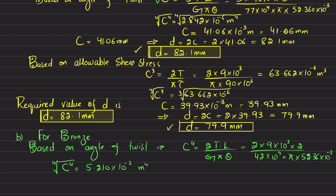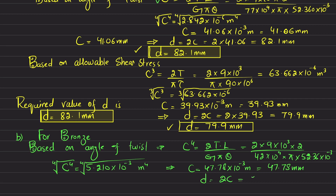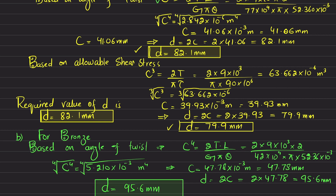Taking the fourth root gives C = 47.78 × 10⁻³ m = 47.78 mm. Therefore D = 2 × 47.78 = 95.6 mm. So based on the angle of twist constraint, the required diameter for the bronze shaft is 95.6 mm.